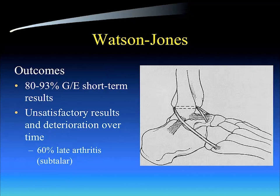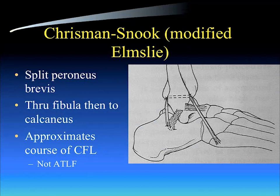Looking at Watson-Jones outcomes from the 1980s: 80% to 93% good and excellent short-term results, but there were unsatisfactory results and deterioration over time, particularly to the subtalar joint, where a 60% late arthritis finding was noted. You'll see that it probably restricted inversion too much.